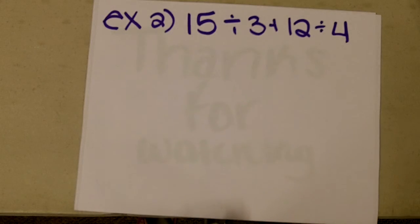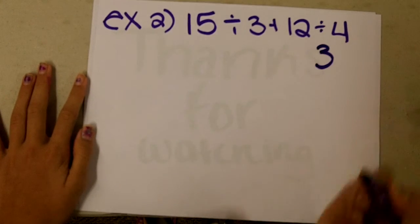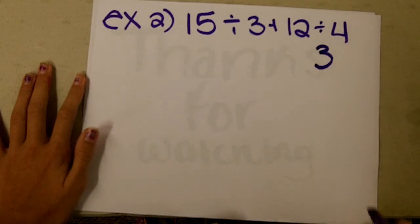The next equation is 15 divided by 3 plus 12 divided by 4. The first step is division. 12 divided by 4 is 3, and 15 divided by 3 is 5.